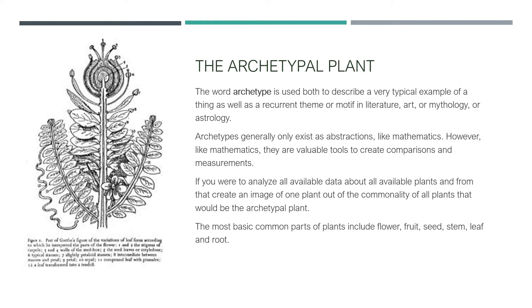When talking about the archetypal plant, if we were to analyze all available data about all available plants and from that create one image from all their common features, that would be the archetypal plant. The most basic common parts of plants include flower, fruit, seed, stem, leaf, and root. If you look at the picture on the left of this slide, we have an image of an archetypal plant that has all of these components.